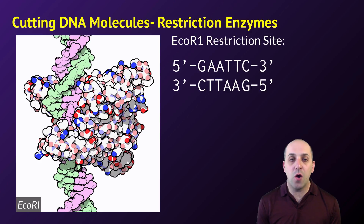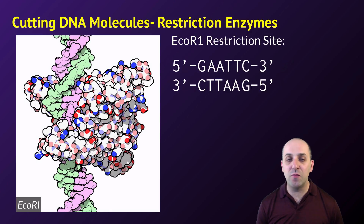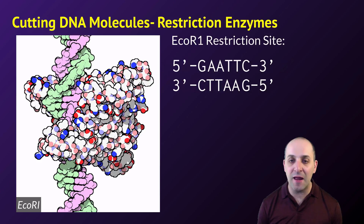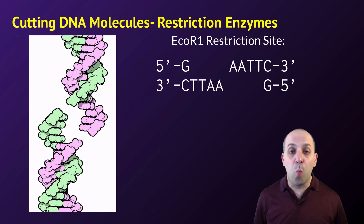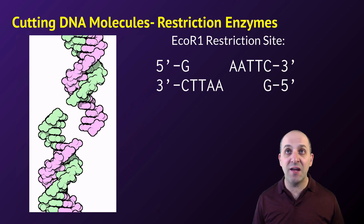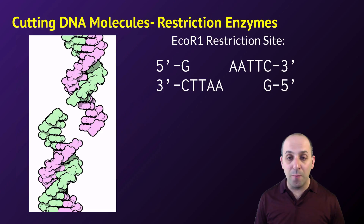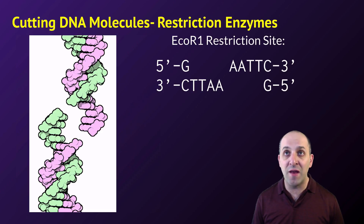The image here shows the EcoR1 restriction enzyme. It recognizes the sequence GAATTC and cuts that sequence in half, separating the DNA molecule at that site into two separate DNA molecules. This is just one example — there are hundreds and hundreds of restriction enzymes, each of which recognizes and cuts at different restriction sites. All of these enzymes are available for genetic engineers to use when they need to manipulate DNA molecules.